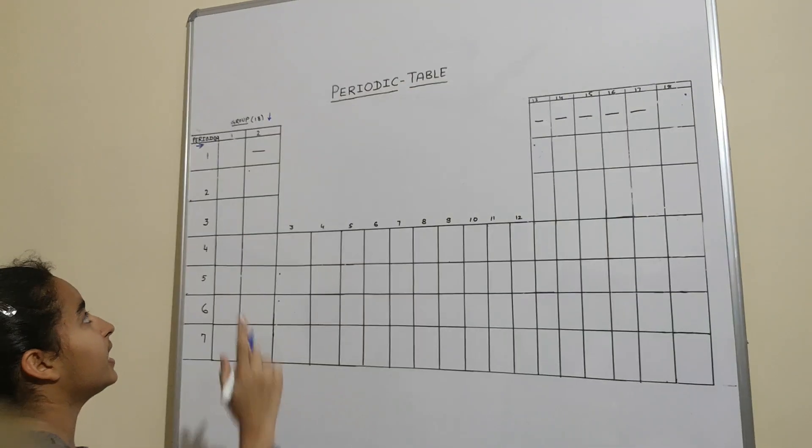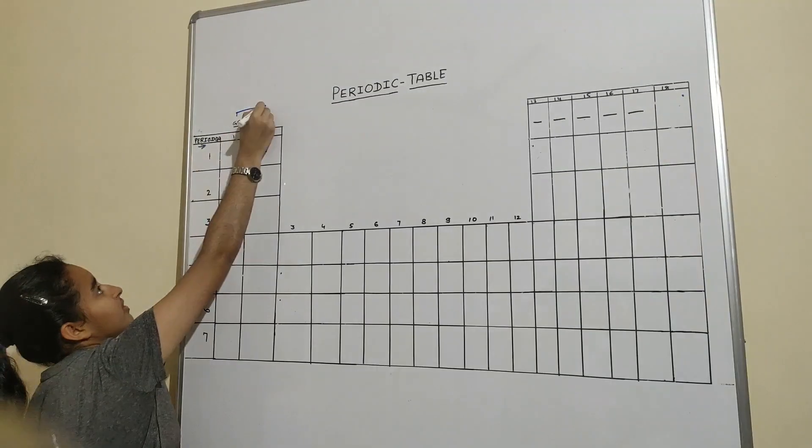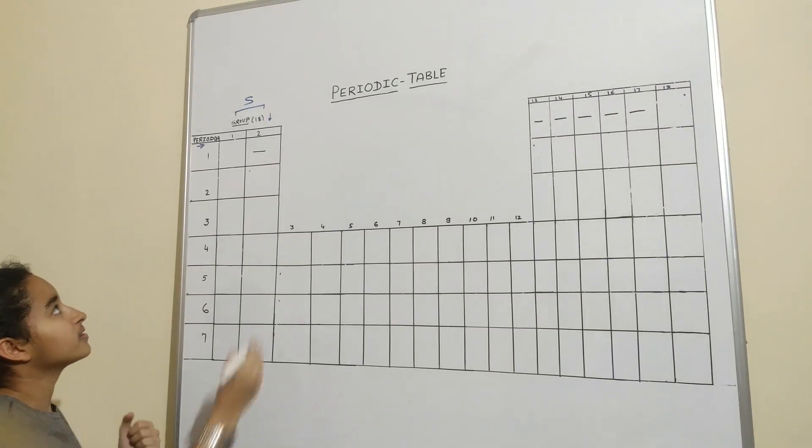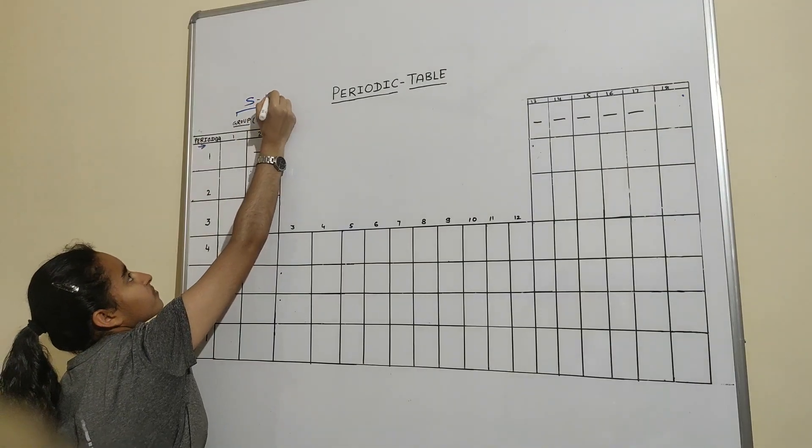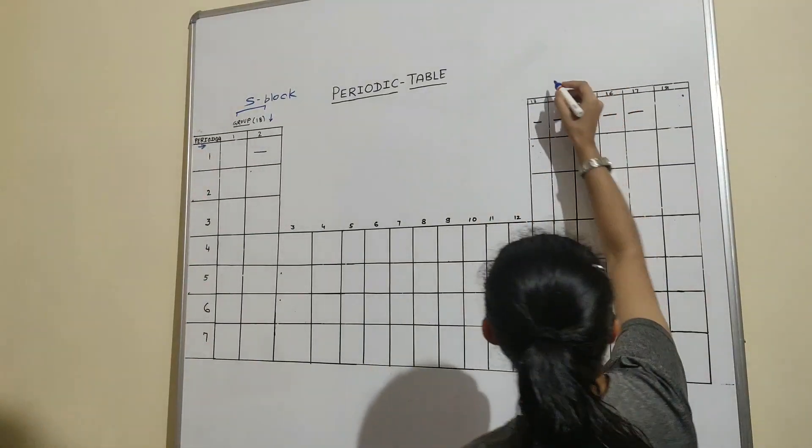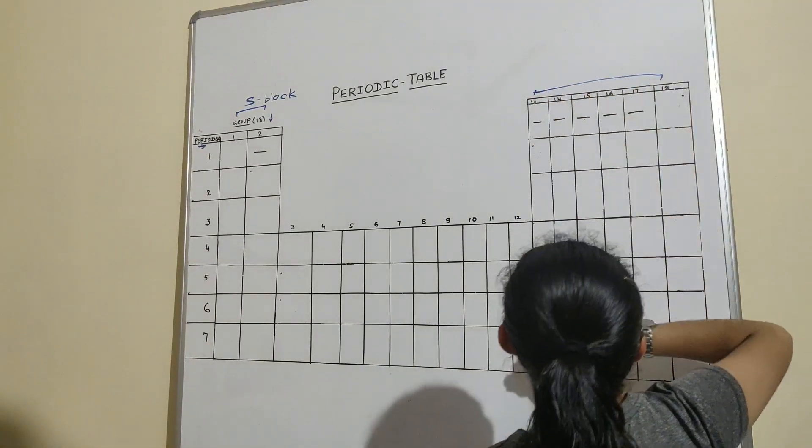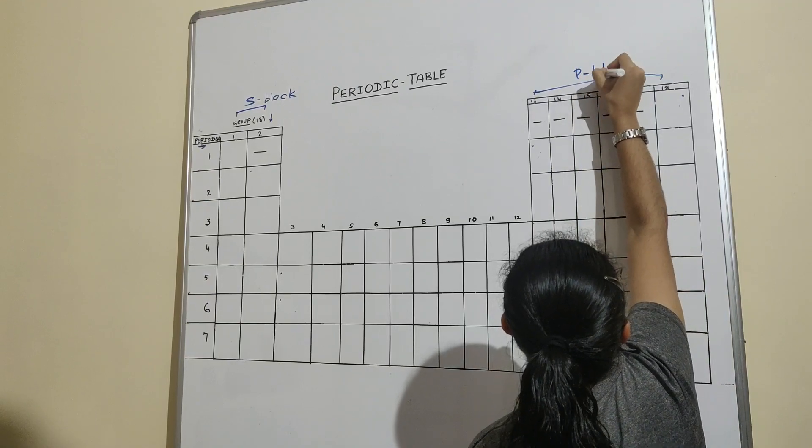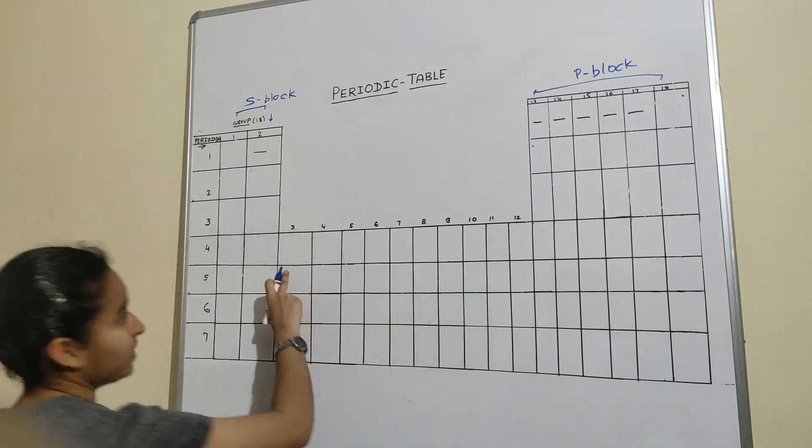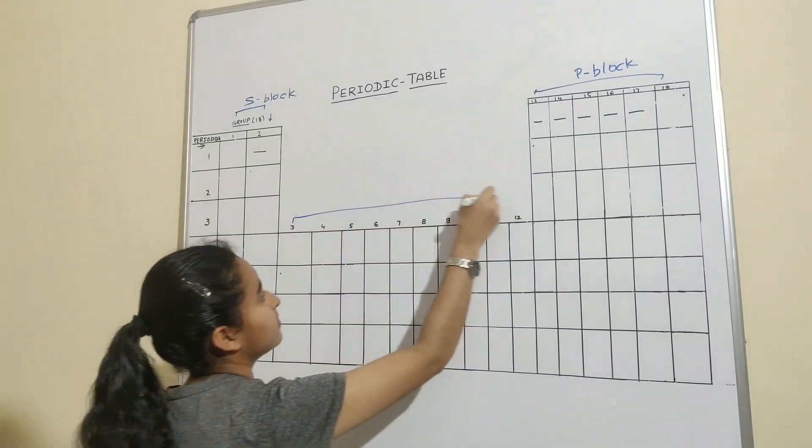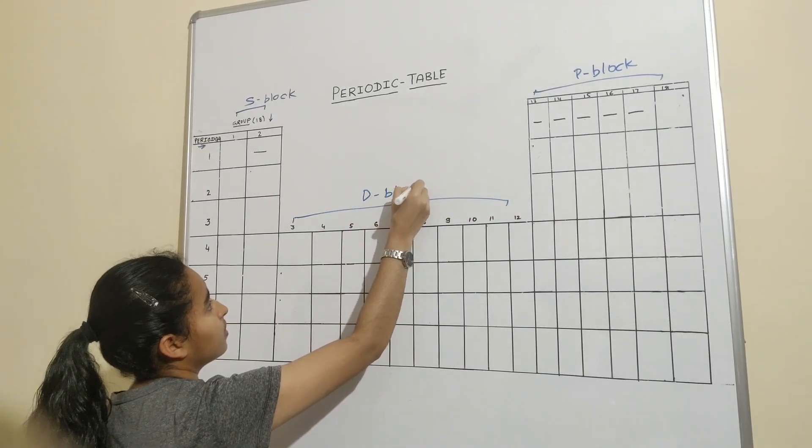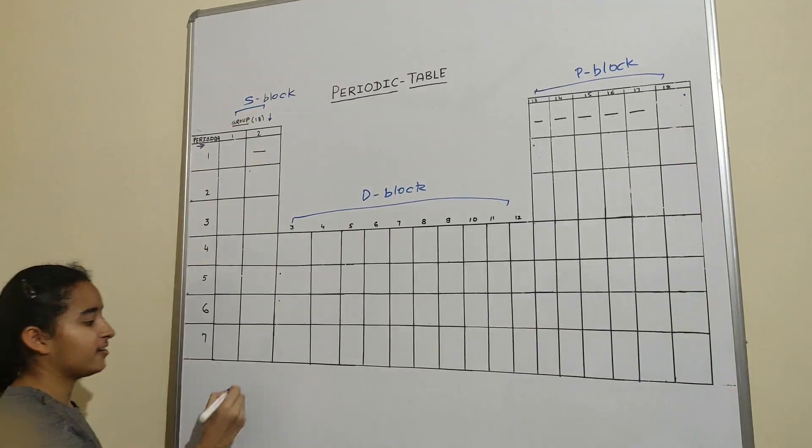And it consists of, it is segmented into four blocks. First is the S-block. Now from 13 to 18, it's a P-block. And now if I move on to the 3 to 12, it is classified as the D-block, and it is further being classified as F-block.